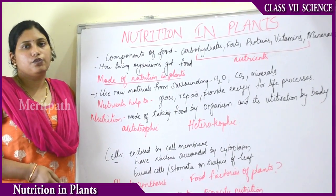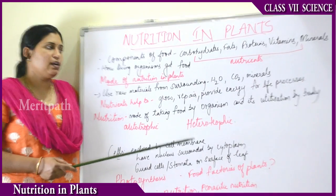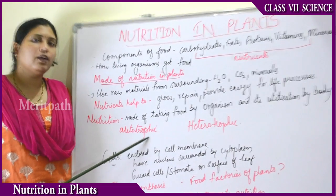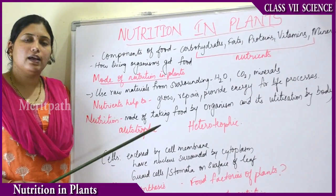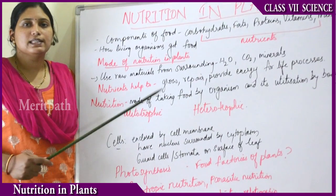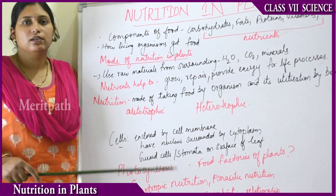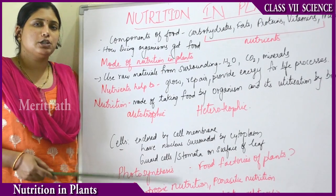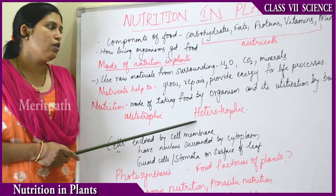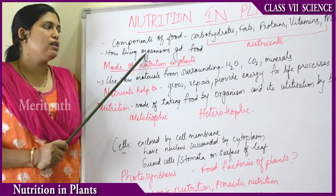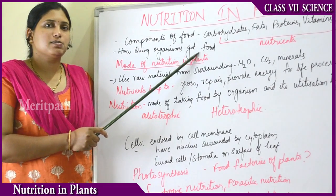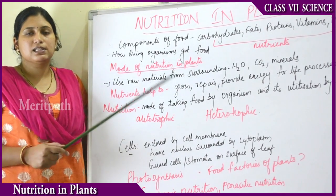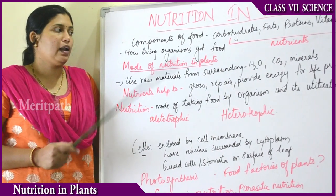Most plants make their own food, which is why they are known as autotrophs — organisms capable of making their own food. Some plants depend on other organisms for their food; such plants are known as heterotrophs. Human beings and animals depend on plants for their food, while plants synthesize their own food.